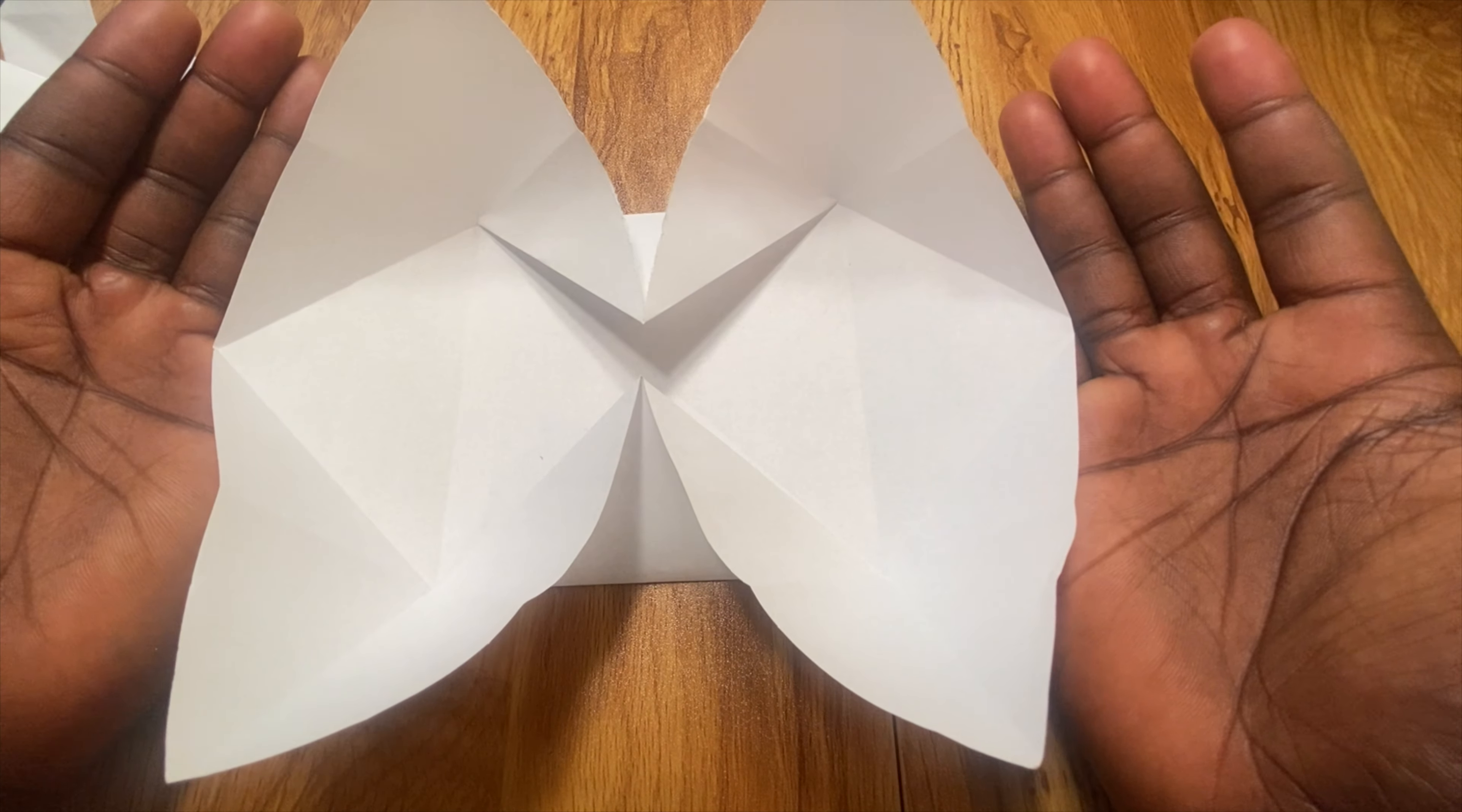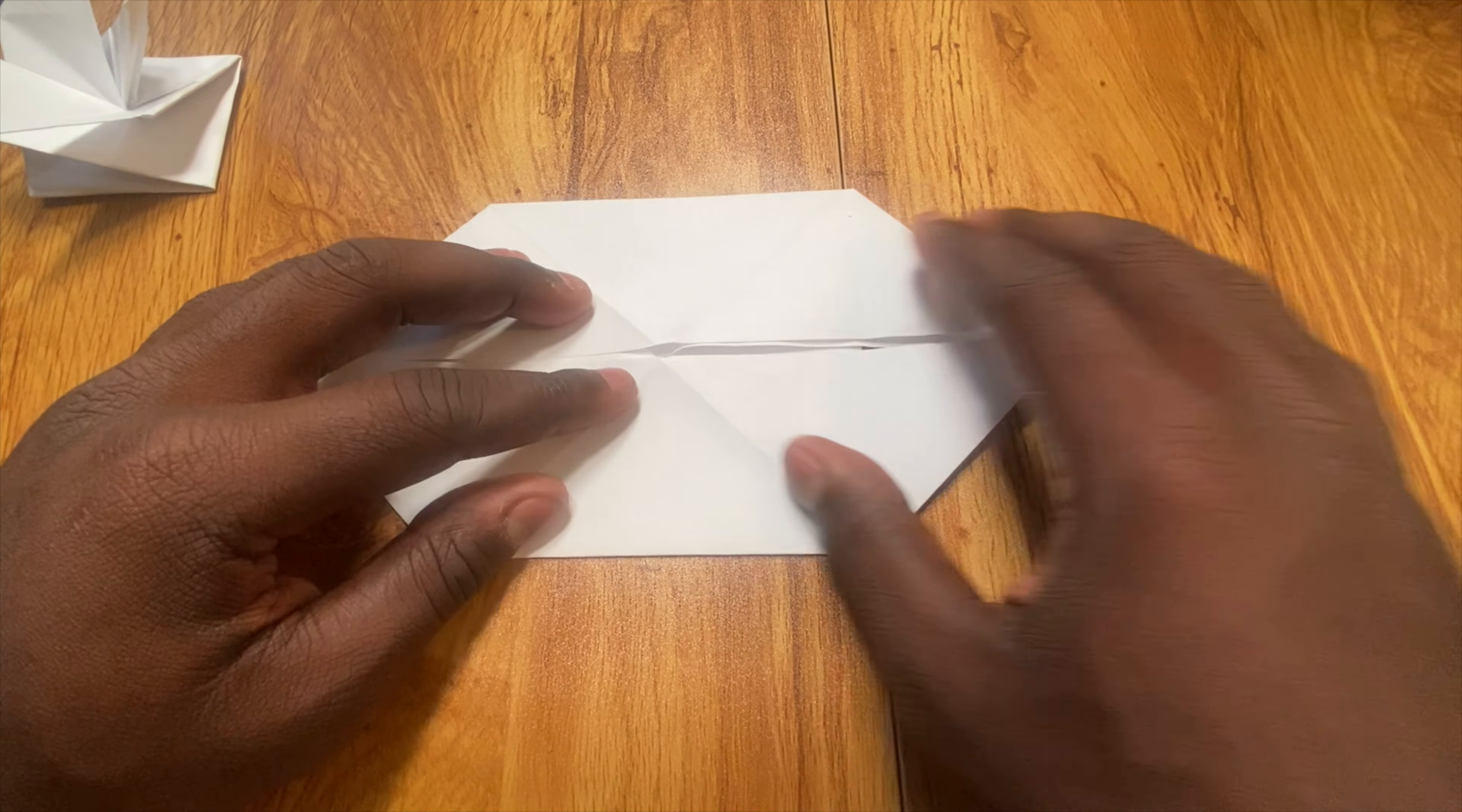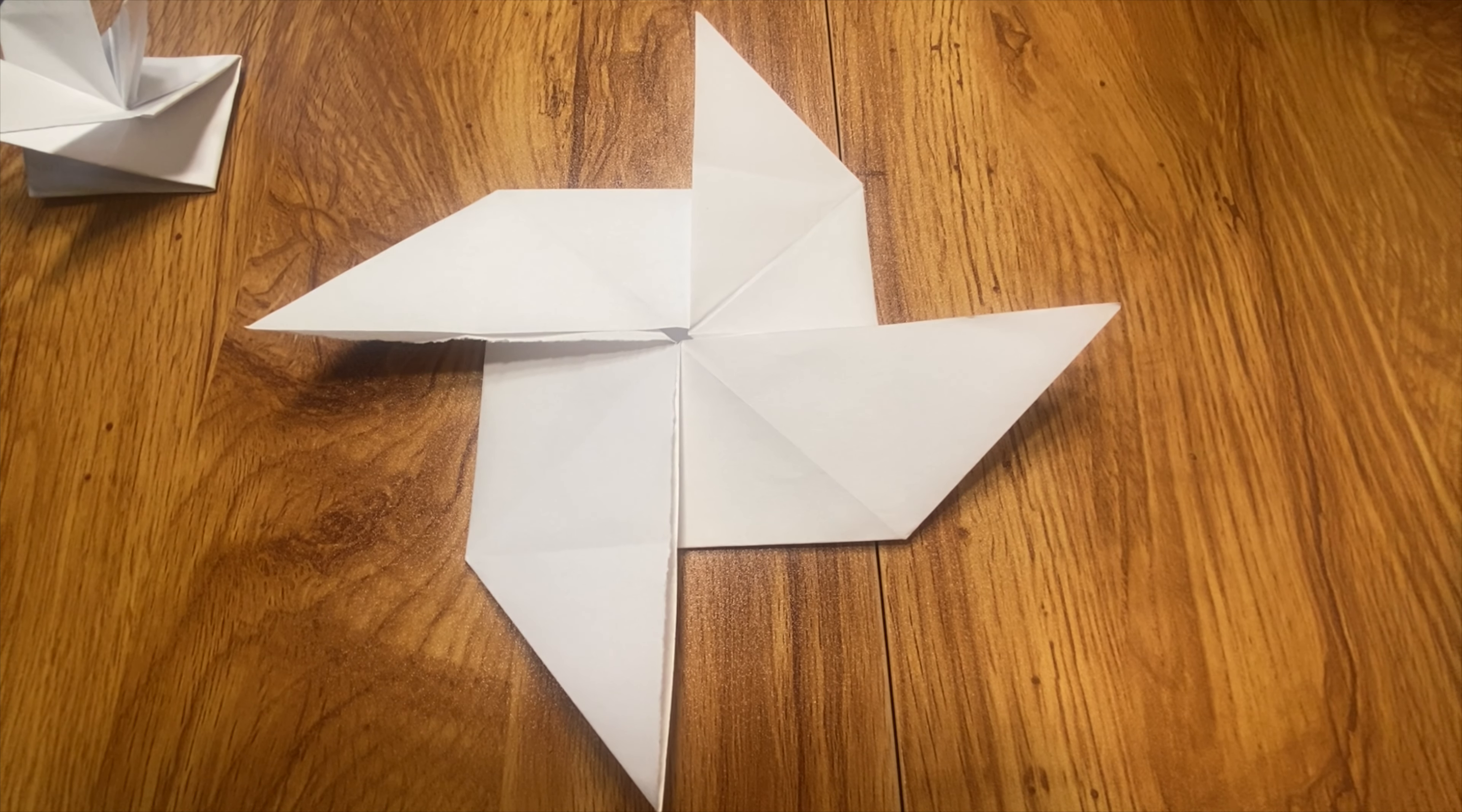Now we're going to collapse our model so it closes like this and we're going to rotate. Then you're going to lift this flap up, fold it up. We'll lift this flap down, fold it down. Now we have sort of a pinwheel style shape of our model.